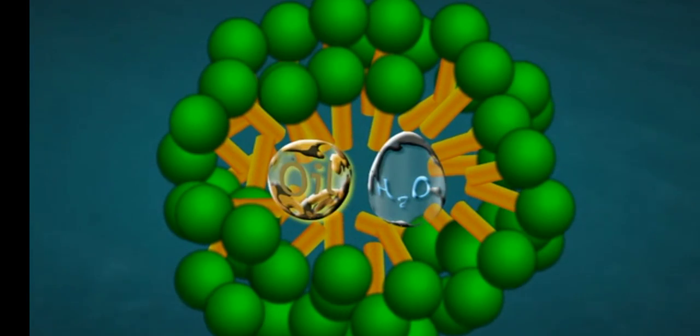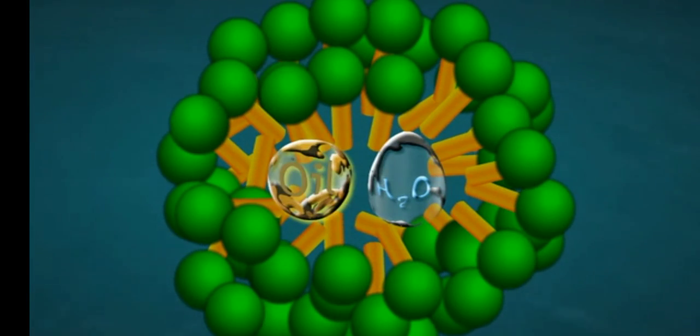The soap molecules form micelle around the oil droplet in such a way that the hydrophobic part of stearate ions is in the oil or grease droplet while the hydrophilic part projects out of the grease droplet like the bristles.